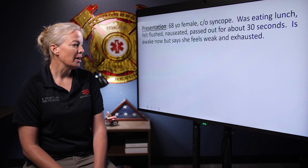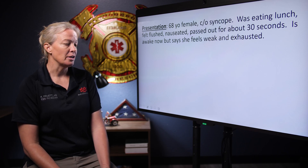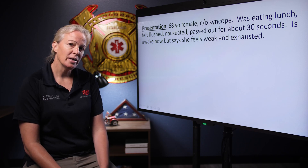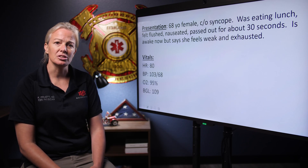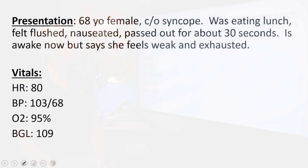So you arrive at the restaurant, you meet her, she's awake and talking to you. These are the vital signs that you get. She's got a heart rate of 80, blood pressure of 103 over 68, oxygen saturation of 95, blood sugar — very important in this case — normal at 109.